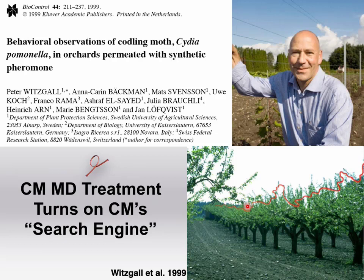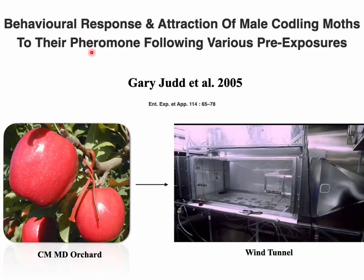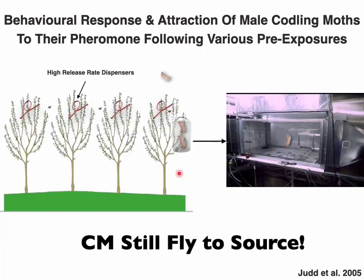They became so adept that they could differentiate male and female codling moths from each other. Peter concluded that codling moth mating disruption treatment turns on the codling moth's search engine — causing them to fly and search for sources. Gary Judd and colleagues at Summerland, British Columbia published a 2005 paper on the behavioral response and attraction of codling moth males to their pheromone following various pre-exposures. Gary wanted to find out whether exposing codling moth males to the background concentration created by pheromone dispensers in an orchard would impact their behavior in wind tunnel laboratory situations.